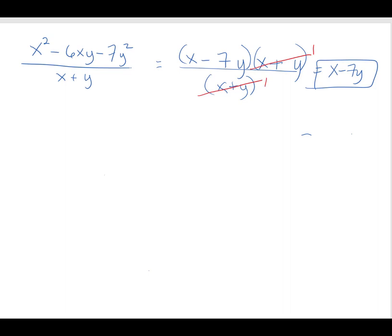If it's factorable, this is generally the fastest way to go about it — if you're good at factoring. But if it's not factorable, or if you don't like factoring, you can always resort back to long division. So let's see this same problem using long division.